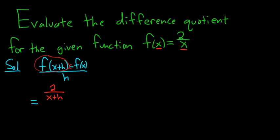Then we keep the minus sign, so minus. And then we have f of x over here. Well, f of x is what we started with, so that's just 2 over x. It's all being divided by h.